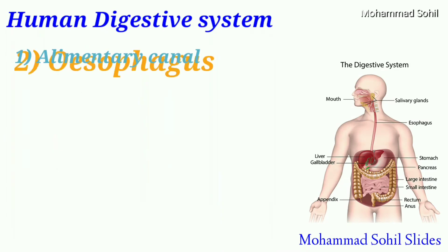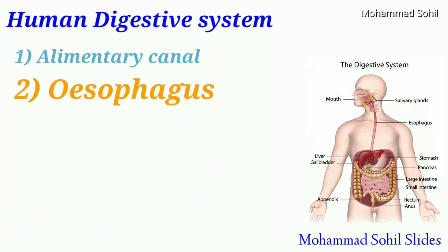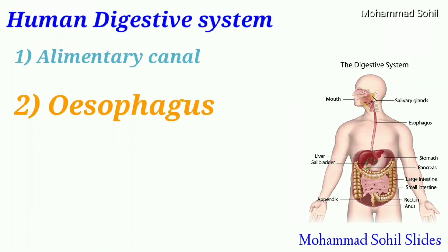Second, the esophagus. The esophagus is a narrow tube carrying the food to the stomach. Due to peristalsis, the food is pushed forward in the alimentary canal.